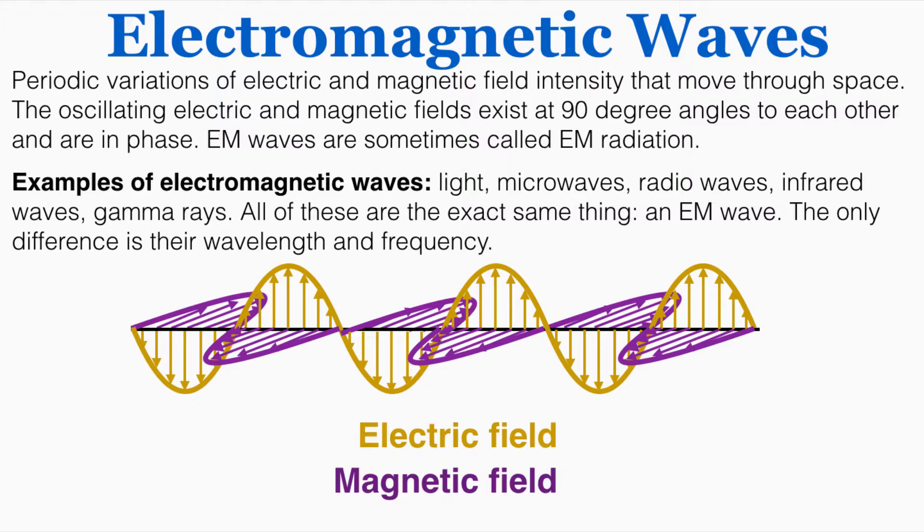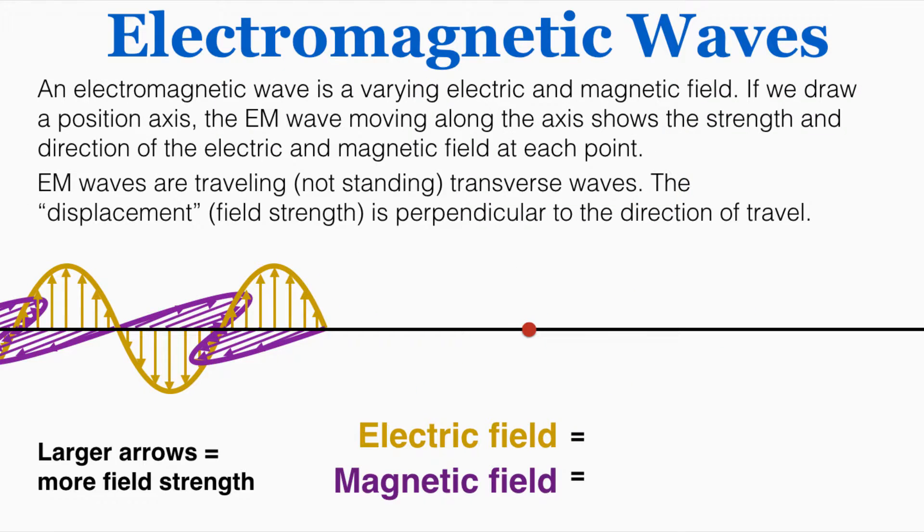I actually had a lot of trouble understanding what this diagram meant when I was learning physics, so I'm going to break it down a little bit more. First, we remember from previous units that larger arrows indicate more field strength. So what's physically happening here is that this is not actually a three-dimensional wave. This is showing the field strength along a one-dimensional path, just a straight line path.